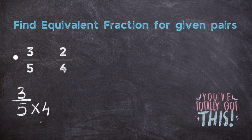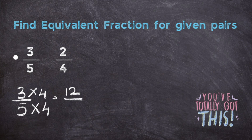The rule for fractions is: whatever you do with the denominator you have to do with the numerator and vice versa. So here I have multiplied four with the denominator, and the same thing I will do in the numerator. Three into four is twelve and five into four is twenty. So this is one equivalent fraction.